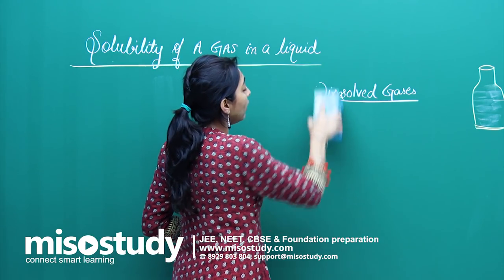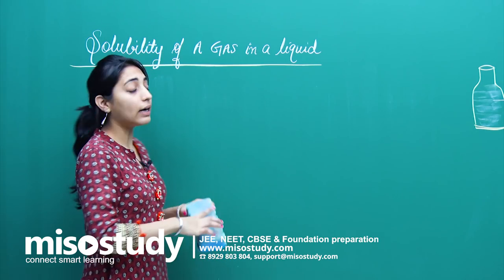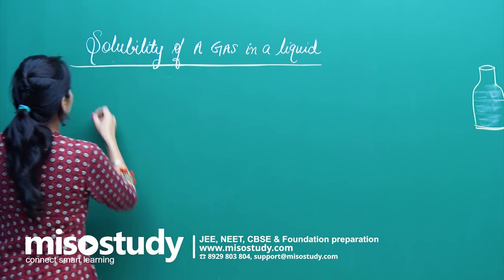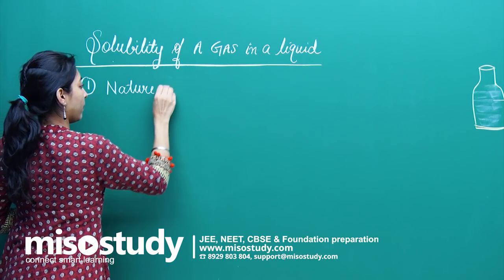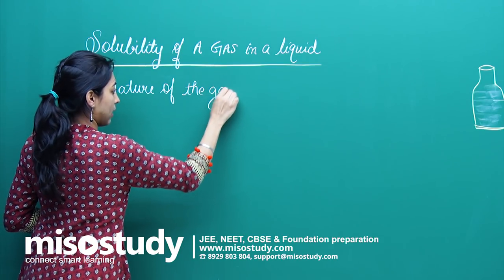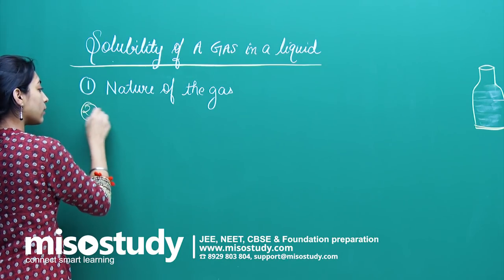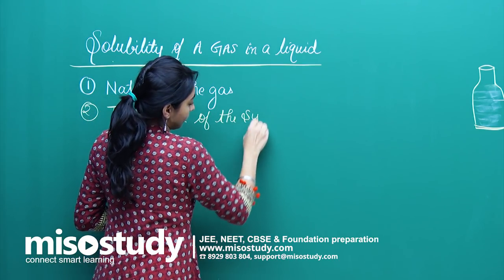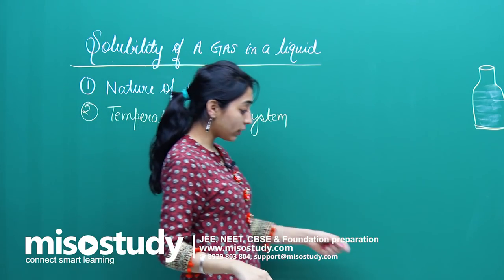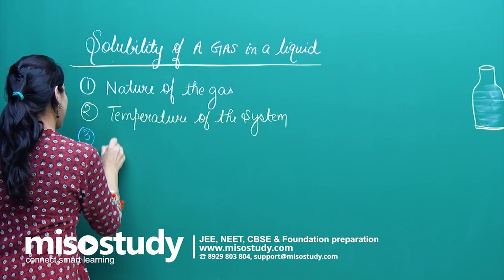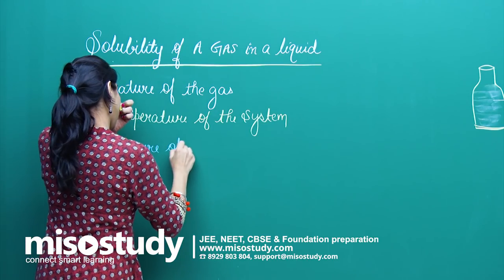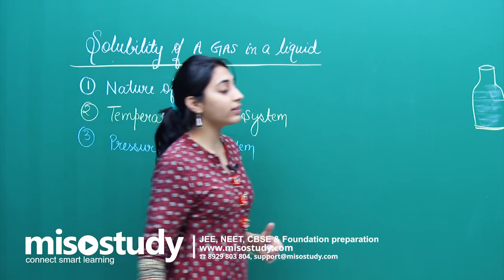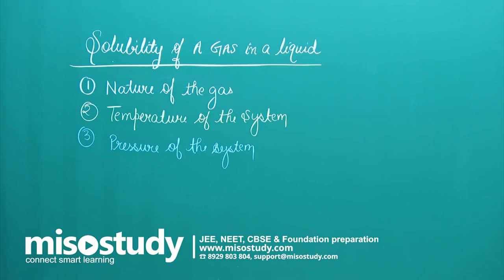There must be certain factors which decide the solubility of a gas in a liquid. The very first factor is the nature of the gas, the second factor is the temperature of the system, and the third factor is the pressure of the system. Let us discuss these three factors one by one in detail.